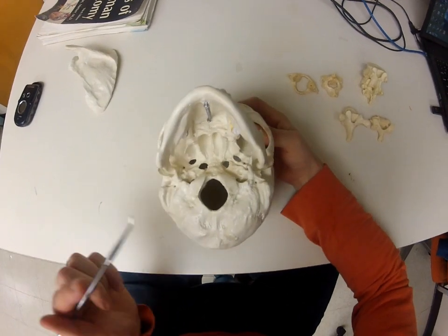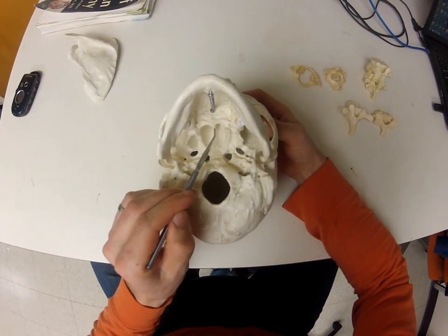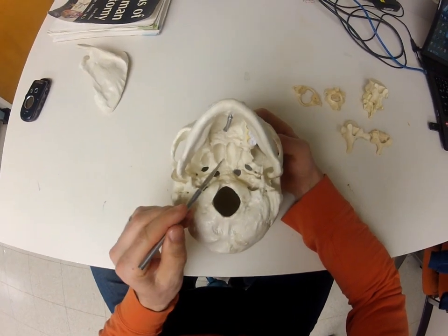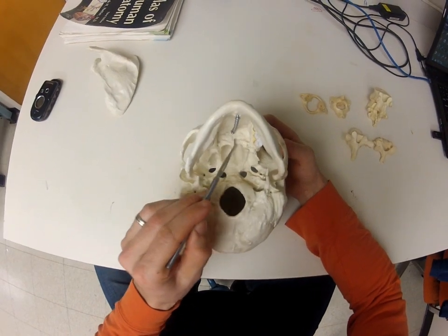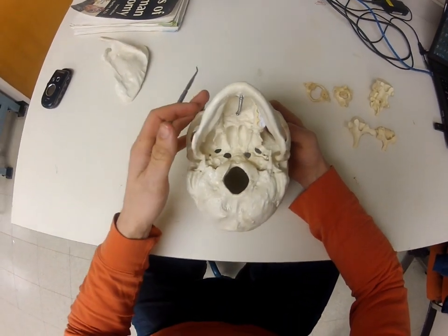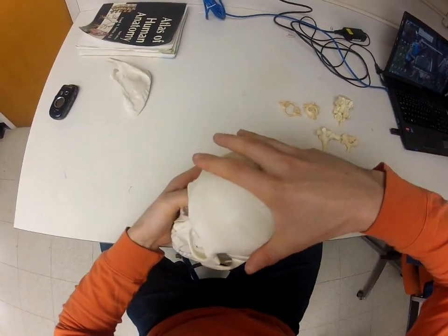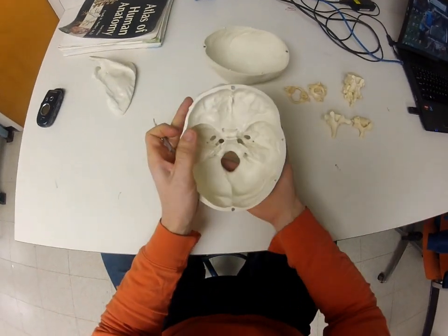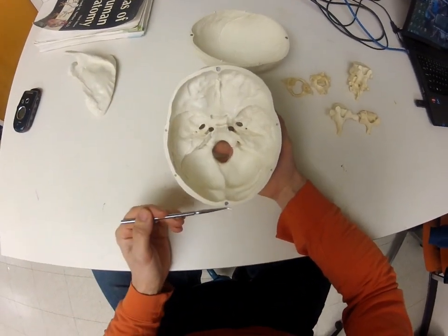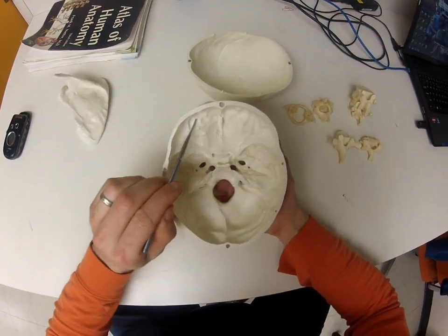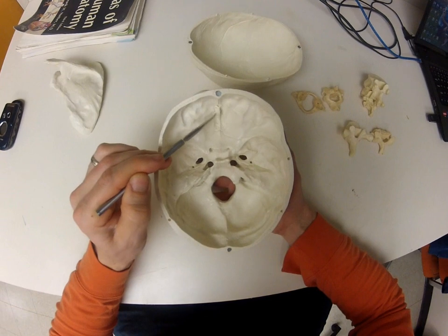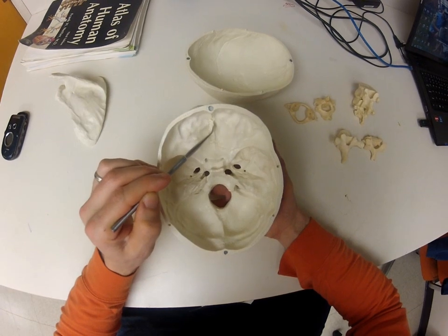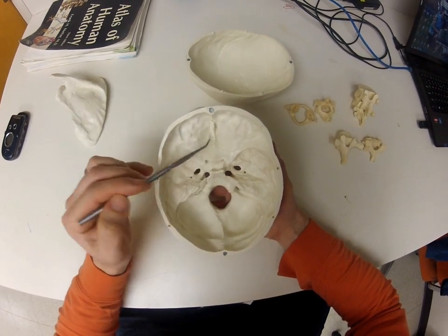Down here we can see the back of the ethmoid plate, and the bottom part on the posterior edge is called the vomer. Up here on the roof of the mouth is where we have the palatine bone. Opening up the skull and looking inside - towards the front is the bottom of the frontal bone. The perforated bone where the olfactory nerve sits is called the cribriform plate, and the ridge sticking up in between is called the crista galli.